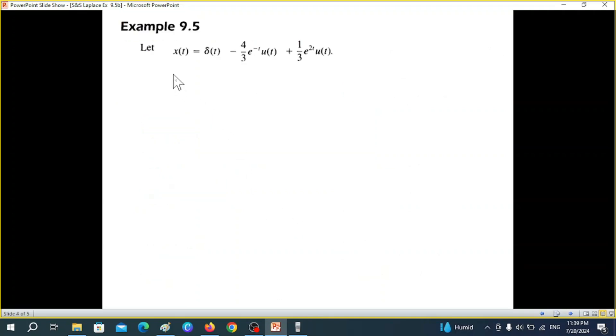The example, this is the example 9.5. We have already solved this. et ut will be 1 over s plus 1. Laplace transform similarly, Laplace transform of e2t ut will be 1 divided by s minus 2. We have already solved these in question number 9.1, 9.2.